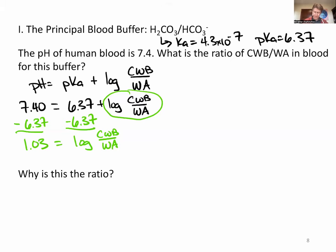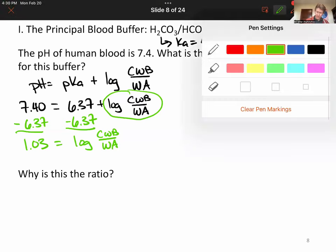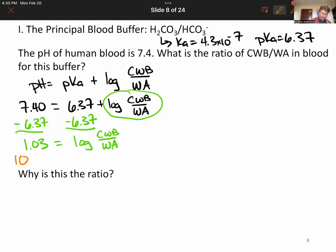And then to cancel our log, we'll take 10 to both sides. 10 to the and log cancel out. We get that 10 to the 1.03, which is 10.7, equals the ratio of conjugate weak base to weak acid. And I would suggest that the best buffers at buffering both strong acid and strong base are going to have a ratio equal to 1. So this is way off.